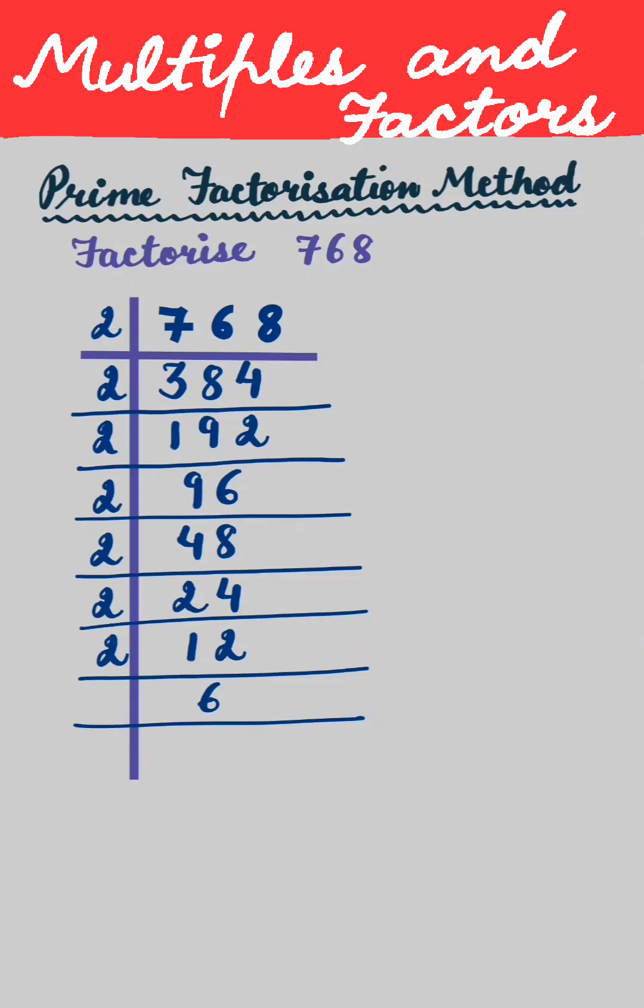You can take 2 or 3. 2 times 3 is 6, then the last one, it goes into 3. 3 times 1 is 3. Now we can write it as 768 is equal to, now we have to write these factors.